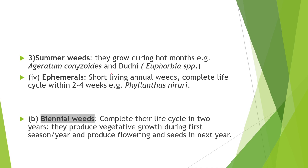Third type is summer weeds — they grow during hot months. Examples are Doodhi (Euphorbia species) and Ageratum conyzoides. Fourth type is ephemerals — weeds which complete their life cycle within 2–4 weeks. The example is Phyllanthus niruri.